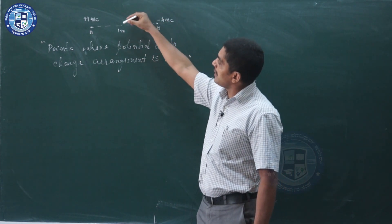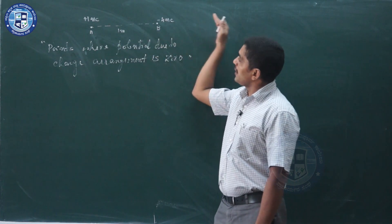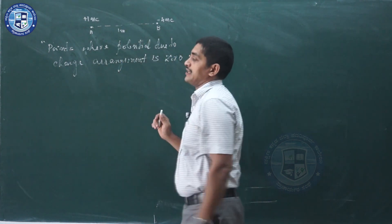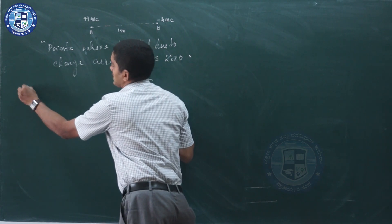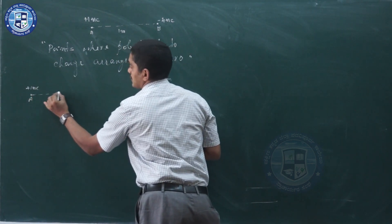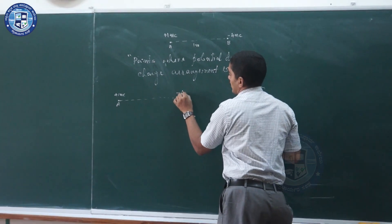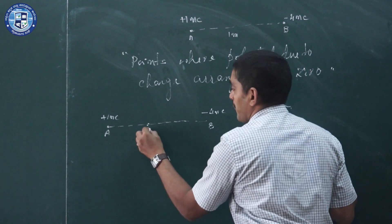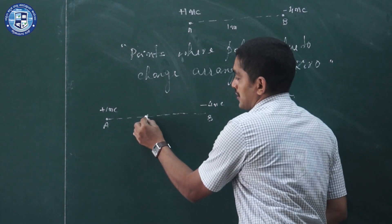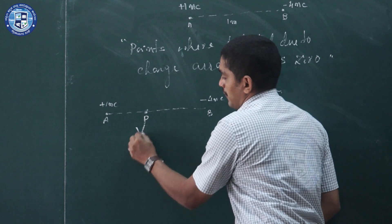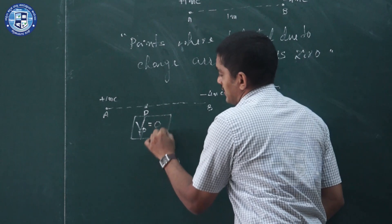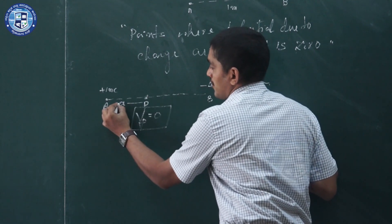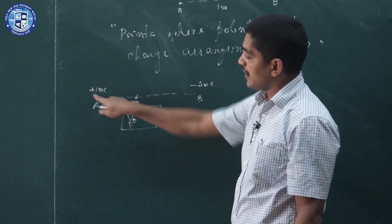The point where potential is zero may be in between the two charges or outside the arrangement. Let us first consider the case where the point lies between the two charges. Let A be +1 nanocoulomb and B be −4 nanocoulomb. We consider a point P between them where potential equals zero, and let the distance from the positive charge A to point P be x, so the distance from P to B is (1 − x).